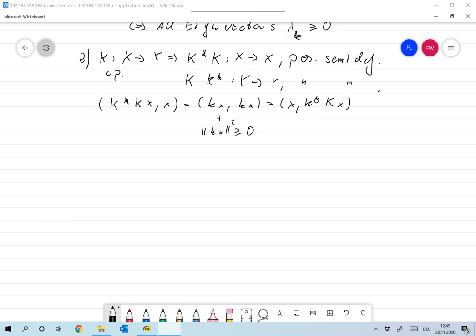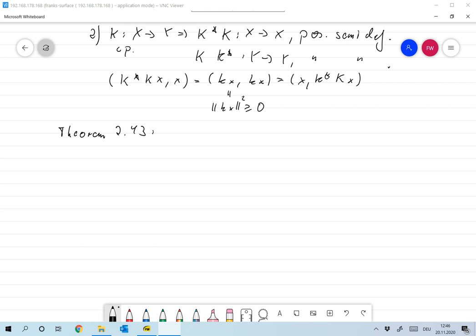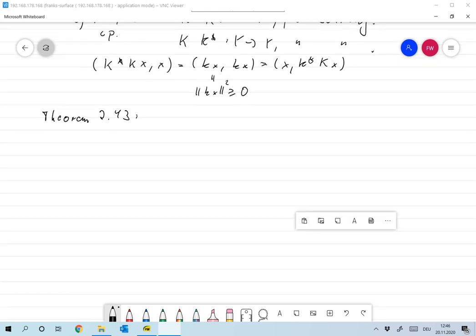Now we are in the position to formulate our theorem. That's the singular value representation, 2.43. And for that we take an operator K from X to Y, linear compact.